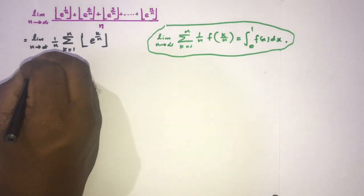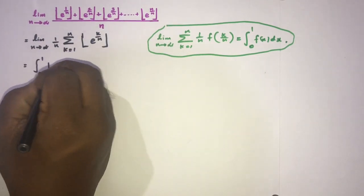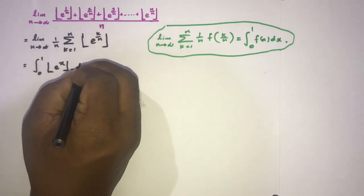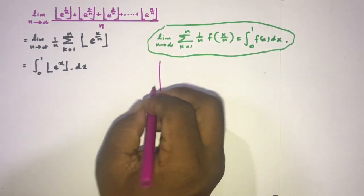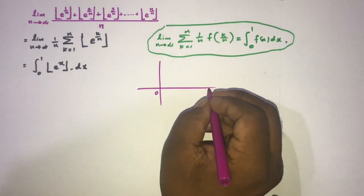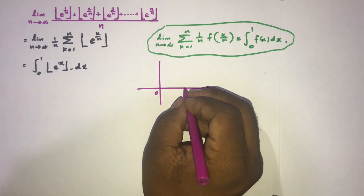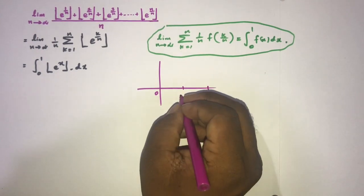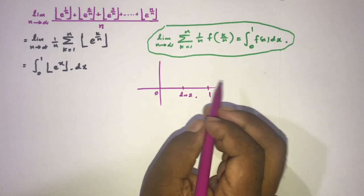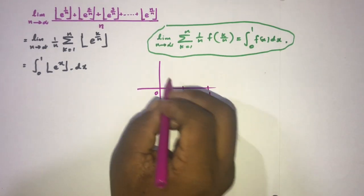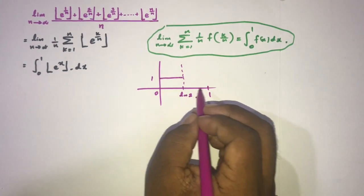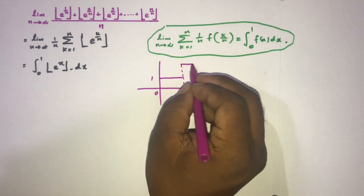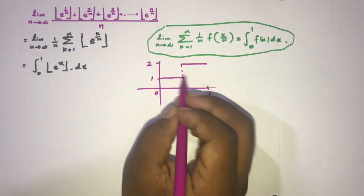Then here now we have integral 0 to 1 floor of e to the x dx. Okay, then if we look at the graph of e to the x, we know here 0, here 1. Here in between 0 and 1 we have natural log of 2, and we know floor of e to the x from 0 to natural log of 2 is 1, and natural log of 2 to 1 floor of e to the x is 2.